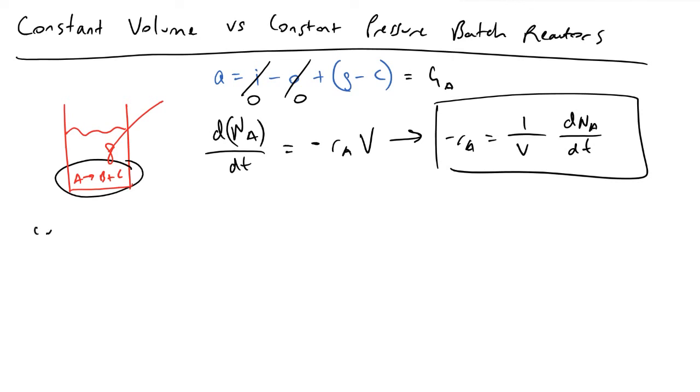And so this is our starting point for both conditions that we're going to be looking at. In the case that we have a constant volume, volume does not equal some function of time, volume is a constant. If that is the case then what we were able to do in this equation right here is move this term into the derivative.